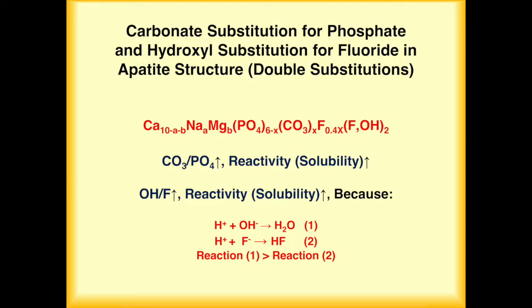Why is bioviral phosphorus so reactive? There is a minor group of apatite called double substitution. This is carbonate substitution for phosphate plus hydroxy substitution for fluorine in the apatite structure — called double substitution.